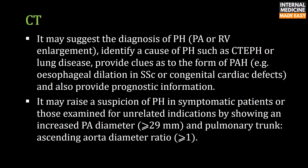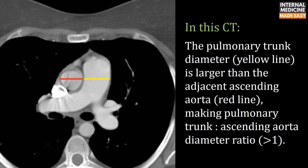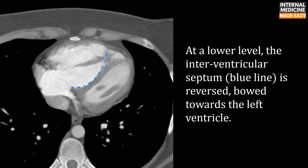CT may raise suspicion of pulmonary hypertension in symptomatic patients by showing an increased pulmonary arterial diameter of ≥29 mm and a pulmonary trunk to ascending aorta diameter ratio of ≥1. In one CT shown, the pulmonary trunk (yellow line) is larger than the adjacent ascending aorta (red line), giving a ratio greater than 1. At a lower level, the interventricular septum (blue line) is reversed and bowed toward the left ventricle.